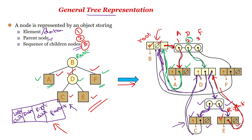F is another child of B, the third child. Node F has three fields: the data field F, the parent field pointing to B, and the child field. Since F has no children, the child field is made null. This is how the tree is represented in memory — in a hierarchical format to denote all the data stored in memory locations. Thanks for watching.